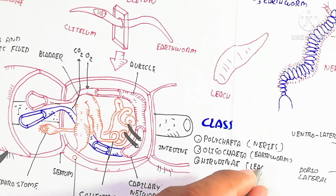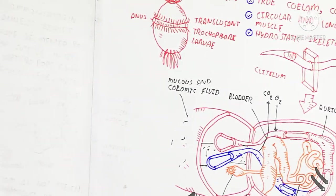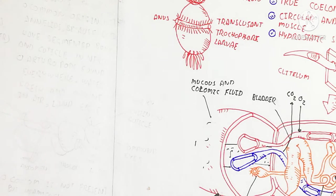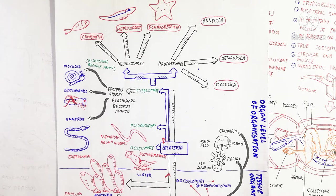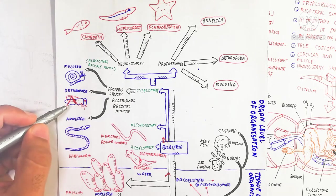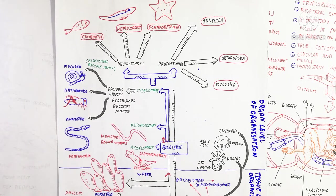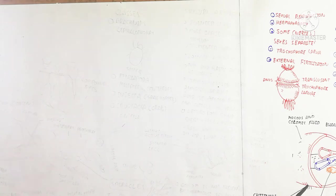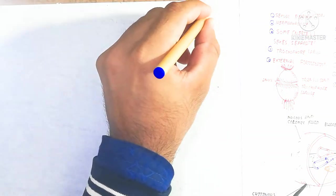Annelida is classified into Polychaeta (known as Nereis), Oligochaeta (which includes earthworms), and Hirudinea (which means leeches). That covers the coelomates, which contain protostomes where the blastopore becomes the mouth. The three coelomate phyla are Annelida, Arthropoda, and Mollusca.